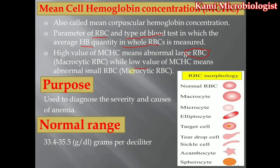In MCHC as well, the RBC size is disturbed due to the hemoglobin concentration. If there is a low value of MCH, it means the RBC size becomes small and we call that microcytic RBC. We mostly perform this test to find out the severity and the main causes of anemia.